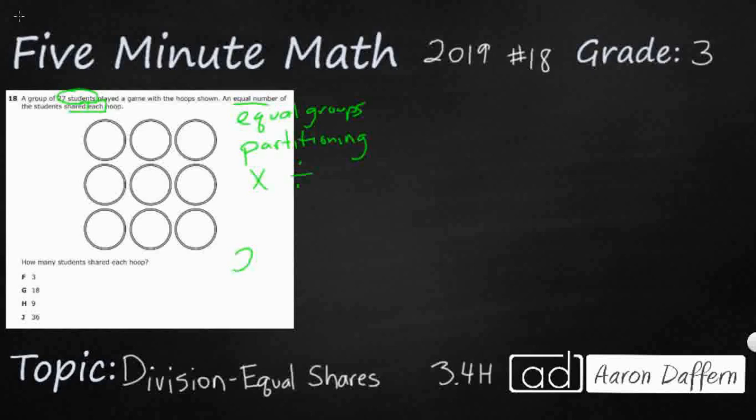So really what we have here is we have 27 students and they are going to be divided into, and we just have to count, we've got nine hoops and they're gonna be divided equally. So that is going to be represented by this number sentence here. Another way to think about it would be well we've got nine groups of how many students each are gonna make the full 27 students.